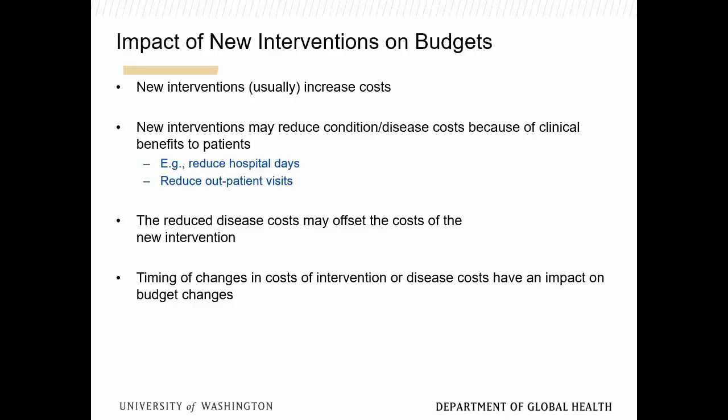New interventions usually increase costs, but not always — especially in implementation science and operations research, where we're usually aiming to reduce cost, so you can have a negative budget impact. At the cutting edge of innovation, costs usually increase. However, there's also the cost offset: a new intervention may reduce hospitalization, reduce nursing care visits, and even reduce costs of palliative care. A lot of work in budget impacts is trying to identify that cost offset. Budget impact analyses are very costing-heavy analyses.